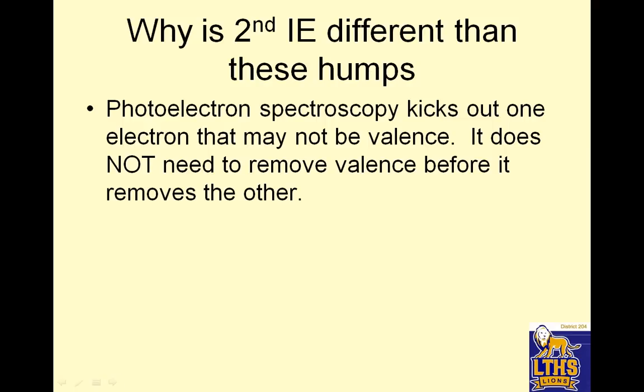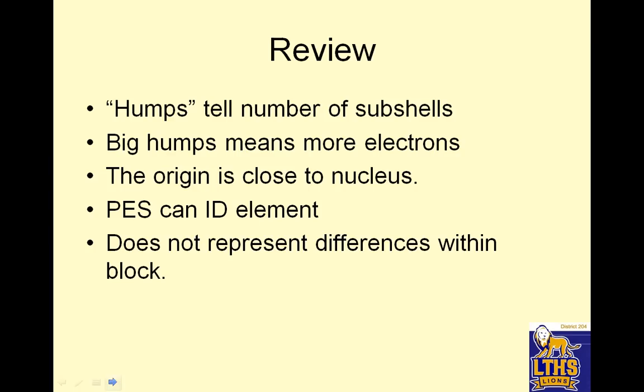So second ionization energy differs than these humps. So what happens is the second ionization energy, photoelectron spectroscopy kicks out one electron that may not be valence. So let me just say any electron is probably even better. It does not need to remove the first one before it removes the second one. Because if you do something in order, so if I'm the nucleus, I'm a positive charge, and if I have a negative and a negative, well if I remove this guy, then the bond here is actually a little bit stronger so it changes it. So ionization energy is not the same as PES.